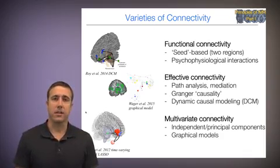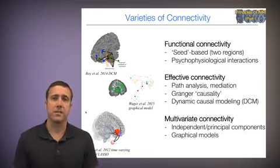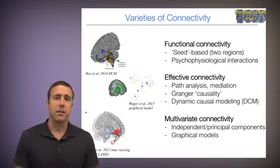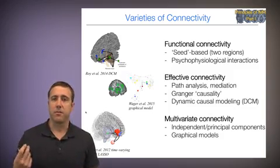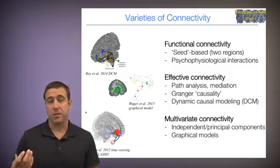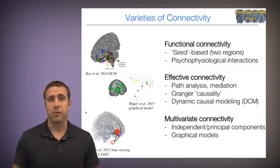And finally, there are models of multivariate connectivity. And they fall into two types of categories. One is a data reduction type, which includes techniques like principal components analysis, independent components analysis, tensor-related versions of those. And the second is graphical models, which refers to the process of constructing a visualization and an analysis framework consisting of nodes and edges among a number of regions, and then deriving properties of that that describe and potentially have some inferential power for explaining behavior.